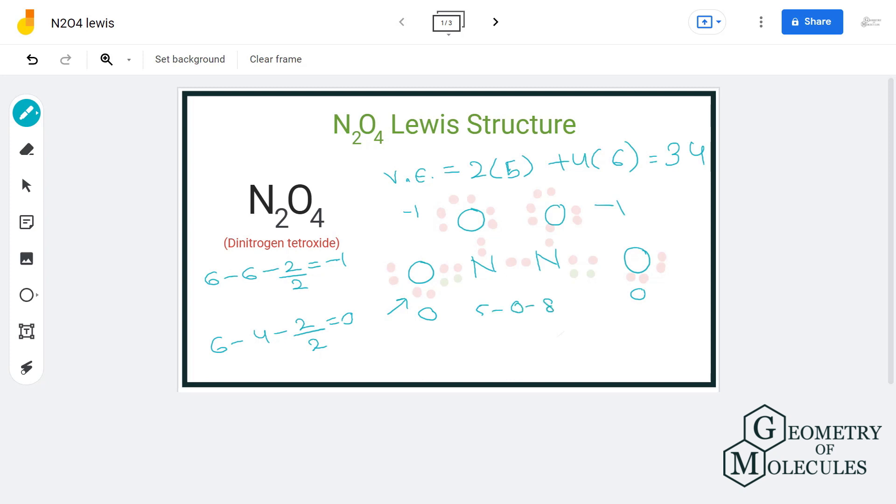Well, we always try to make the formal charges zero on every atom so as to minimize the charge distribution and increase stability. But sometimes it is not possible to do so, so what we do is instead try to minimize the charges like we did in this case.